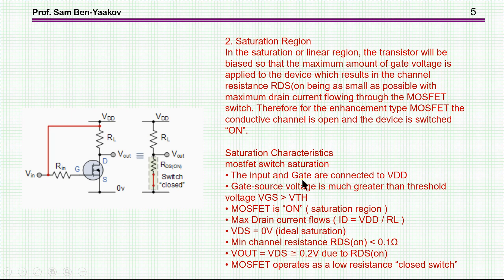The input and gate are connected to VDD, gate source voltage is much greater than threshold voltage VGS larger than threshold, MOSFET is on in saturation region, and then maximum drain current flows, ID is VDD over RL, VDS is 0V.